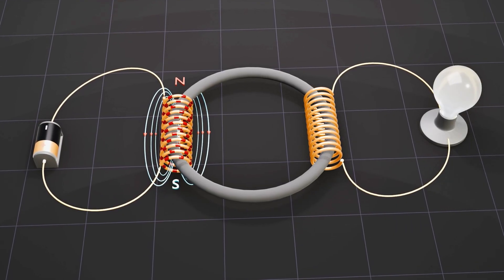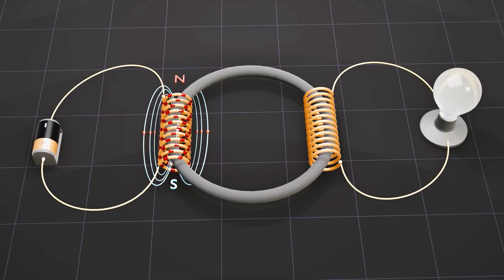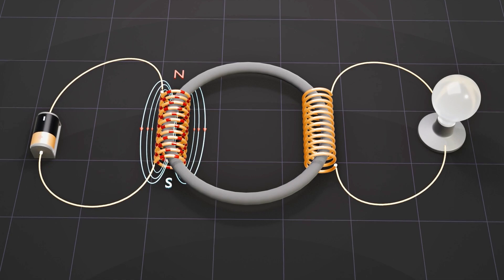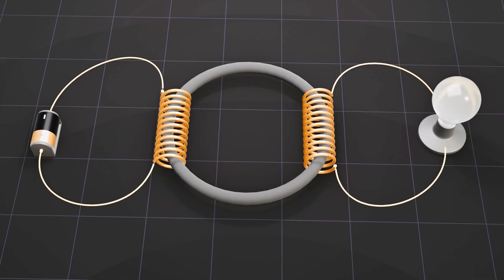When the current in the primary coil stabilizes and the magnetic field remains constant, no current flows through the secondary coil.